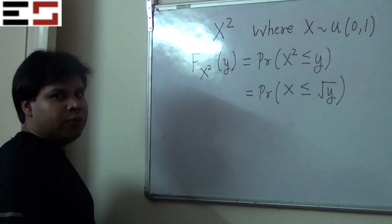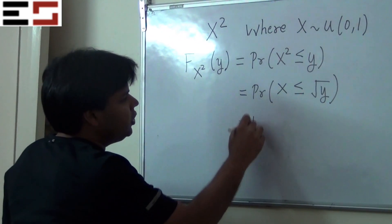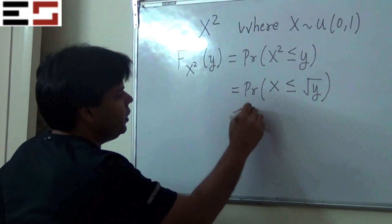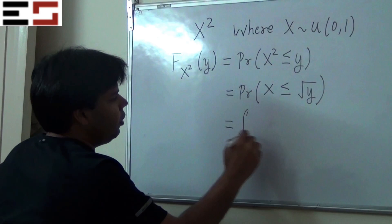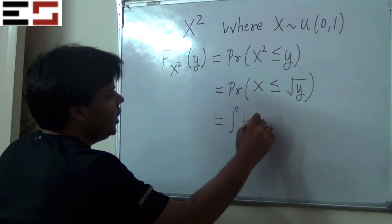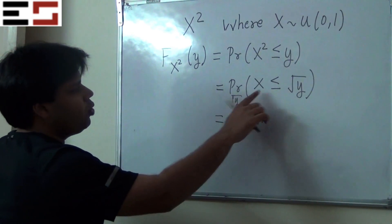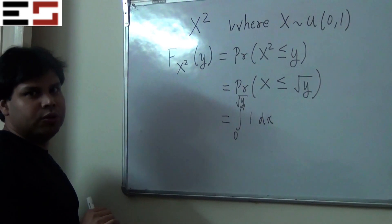Now since x is uniform 0 1, this is simply the integral of 1 dx from 0 to root y because we want probability that x is less than or equal to root y.